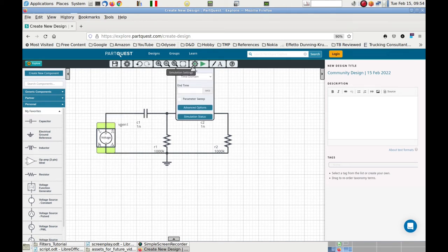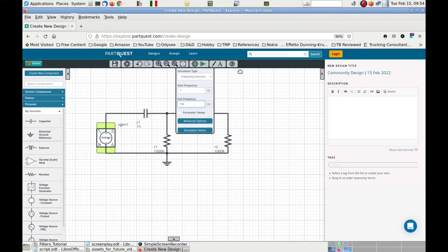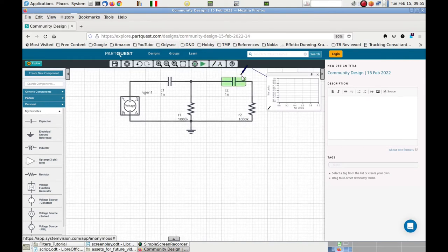Done that, we open the settings of the simulation and we specify that we want to run a simulation in the frequency domain since we want to trace the Bode diagrams. And then we specify the range of frequencies that will be used. If later we discover that the range was not fine, we can still go back, change it and rerun the simulation, of course.